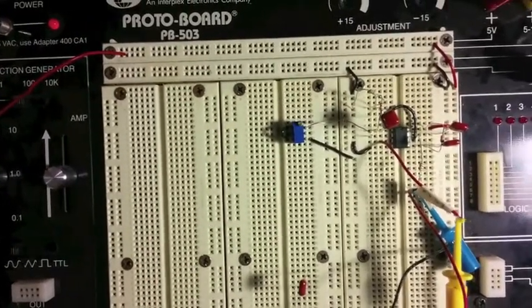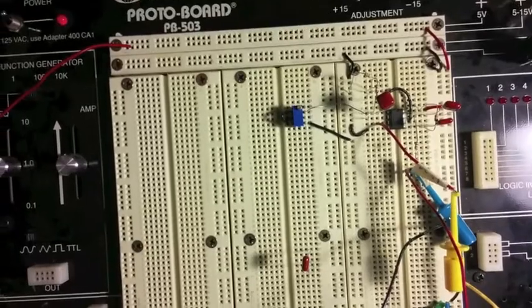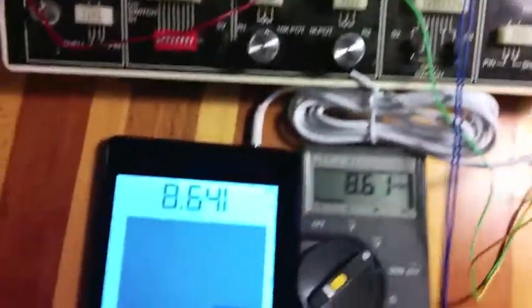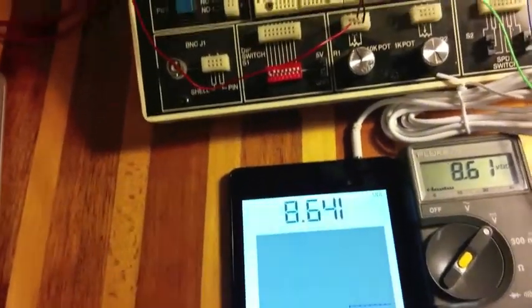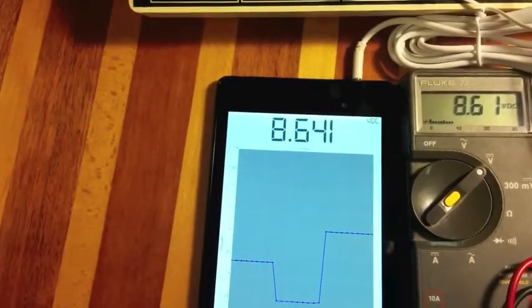You see a voltage controlled oscillator. What that does is input a voltage and output a frequency, and that frequency is then fed into the audio port of the device, and the app translates that frequency into a voltage.